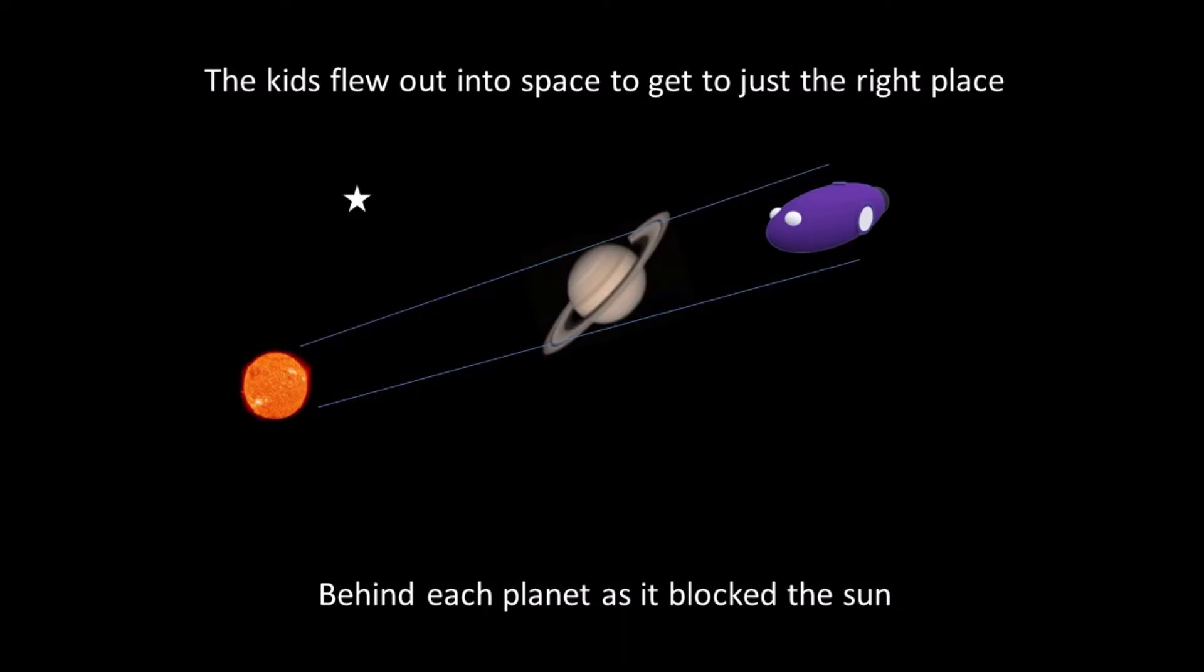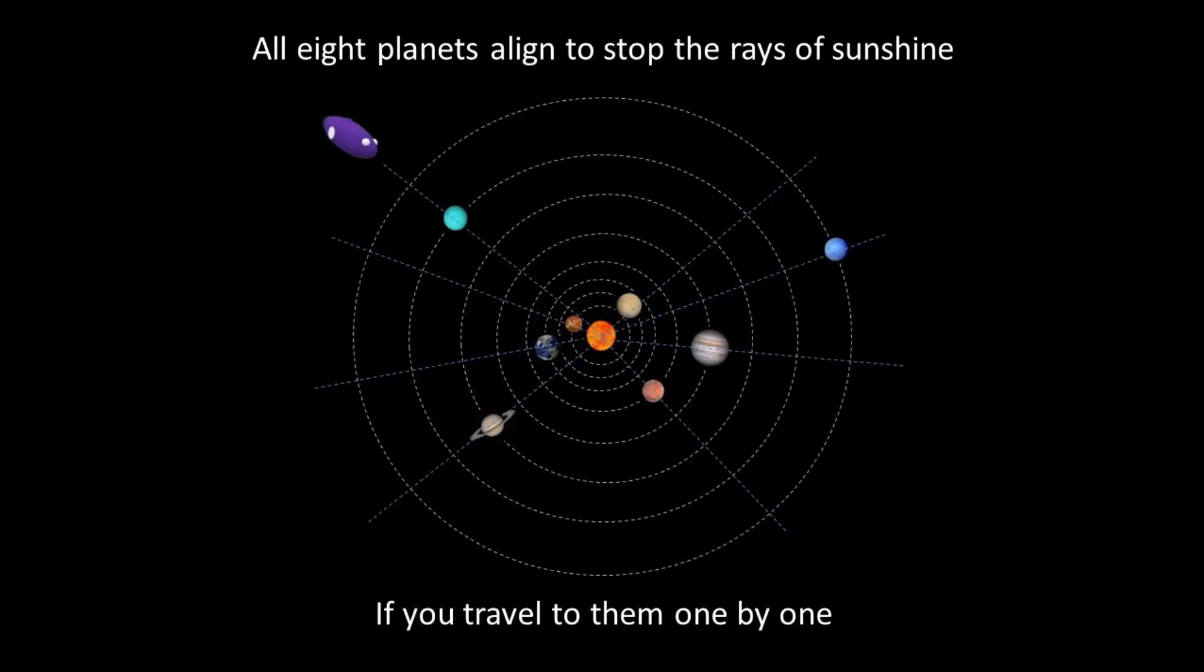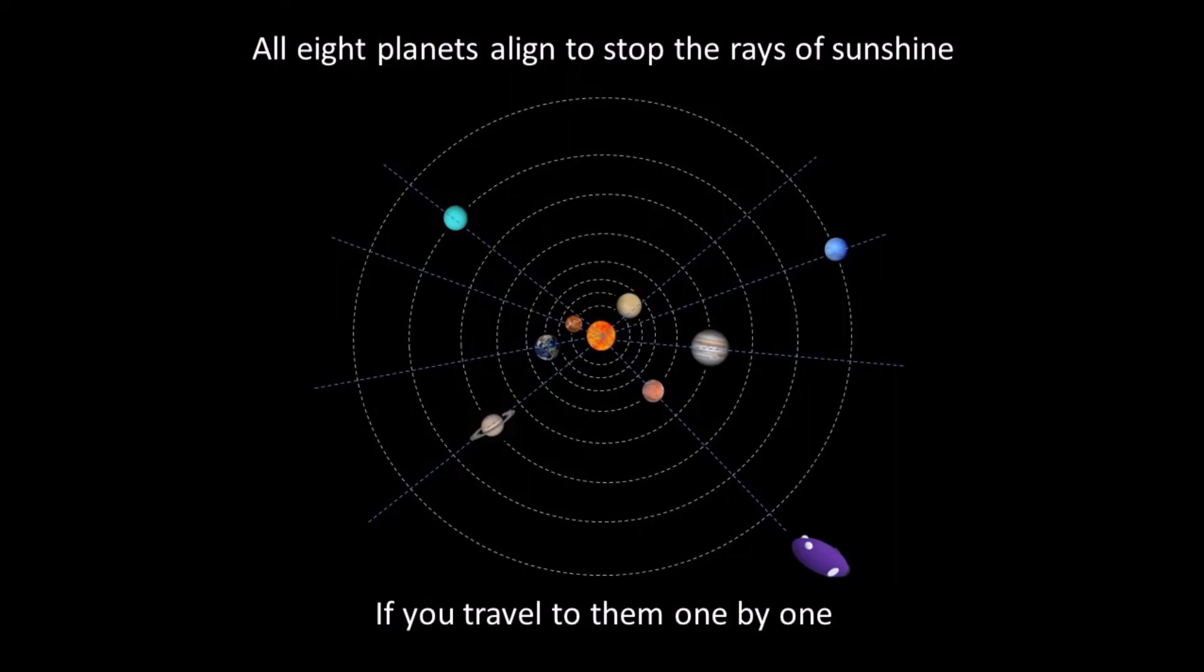The kids flew out into space to get to just the right place behind each planet as it blocked the Sun. All eight planets aligned to stop the rays of sunshine if you travel to them one by one.